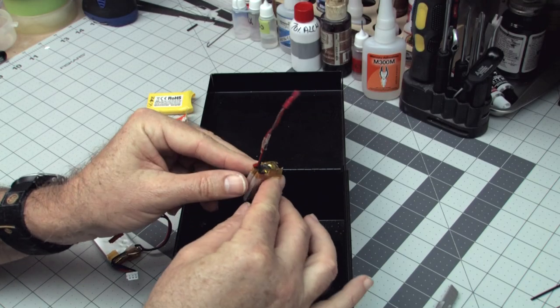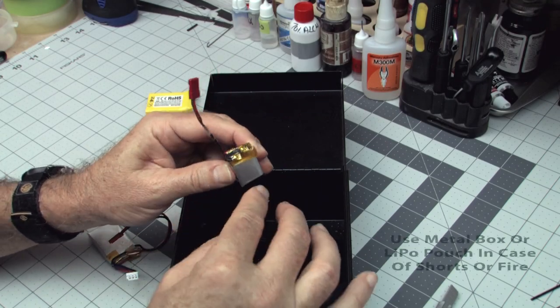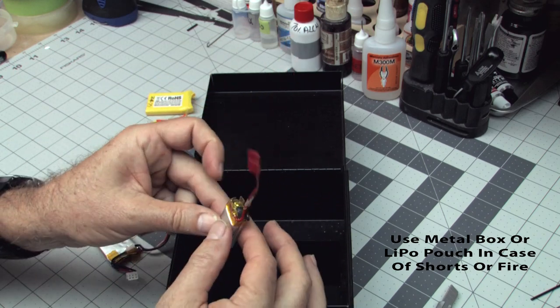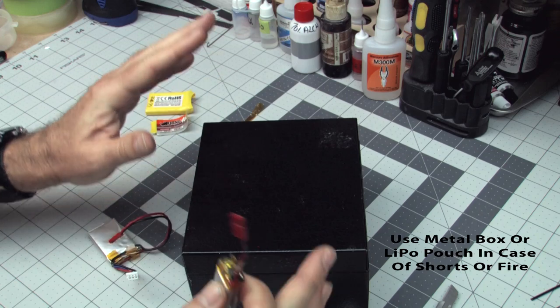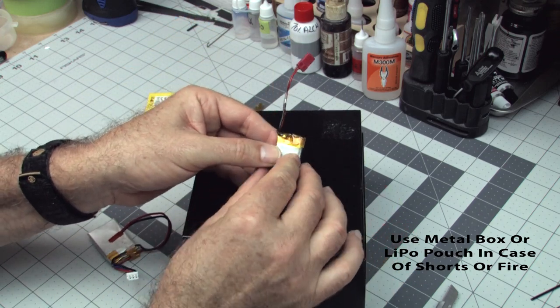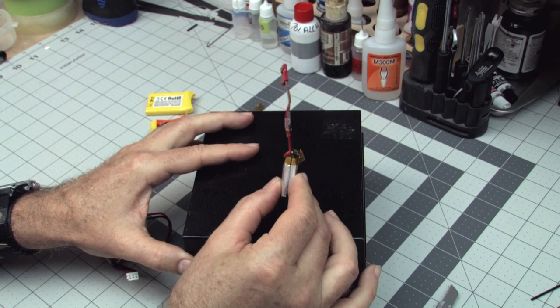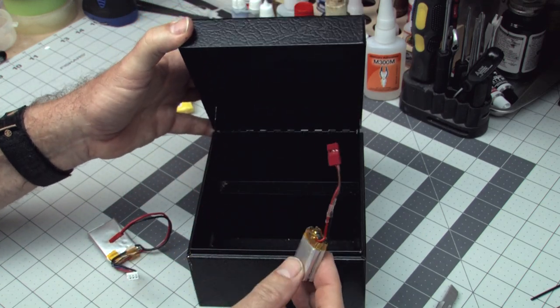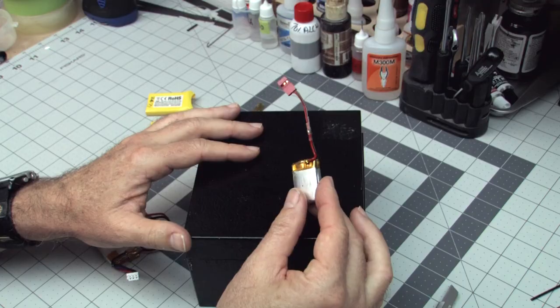Now just in case I really screw this up and have a runaway short, or do some other damage to the battery and it starts shorting and smoking, I can throw it in the steel box here. Close the lid and get it out of the house. Because even a small pack like this can produce considerable heat and smoke, and maybe even a little bit of fire. So a steel case or a LiPo sack is really a good idea to have on hand while working on these cells.